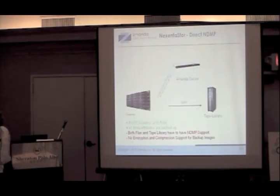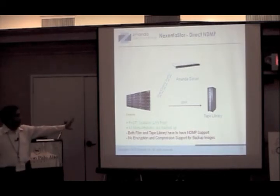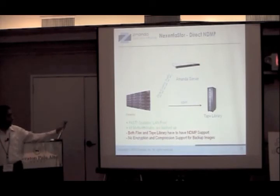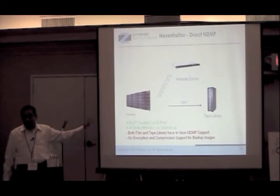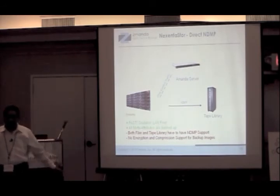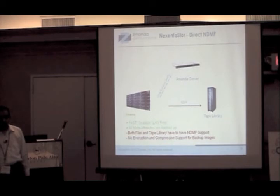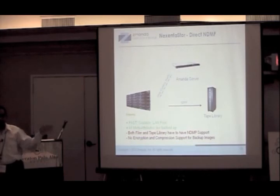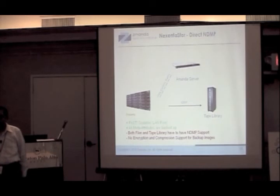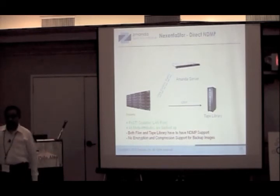The third option is direct NDMP. This is very useful if you have a tape library or tape changer on the same SAN as your Nexenta store. The data actually goes directly from the Nexenta store to the tape library without going through the Amanda server, making it much faster and more efficient. This requires your tape library or VTLs — for example FalconStor — to support NDMP and be on the same SAN. The data never hits the network; only the control traffic and index files move to the Amanda server.